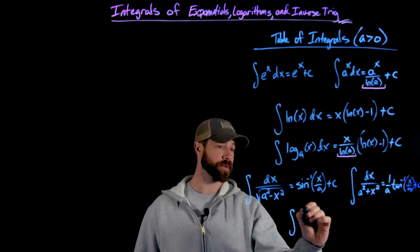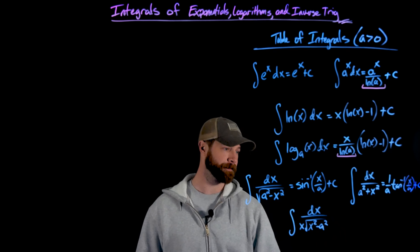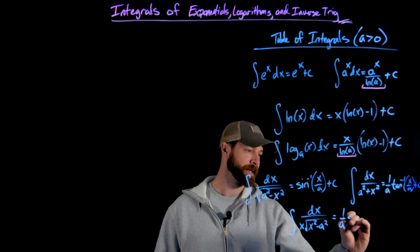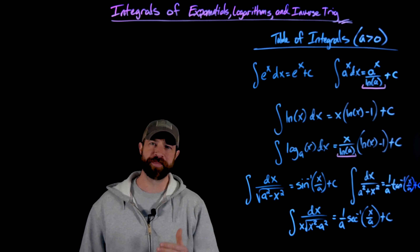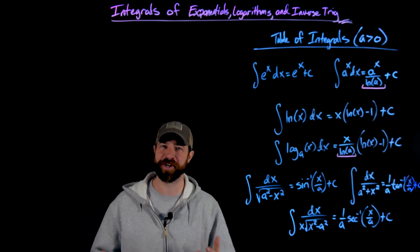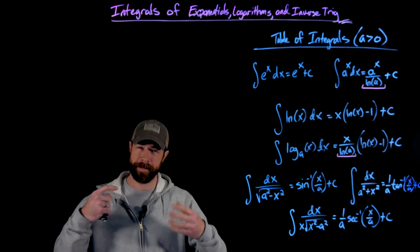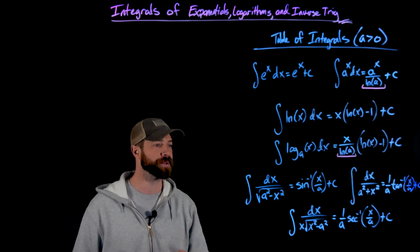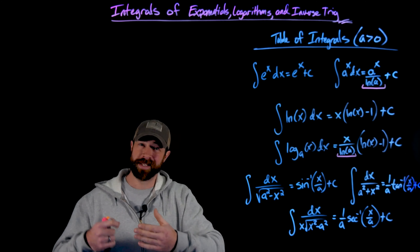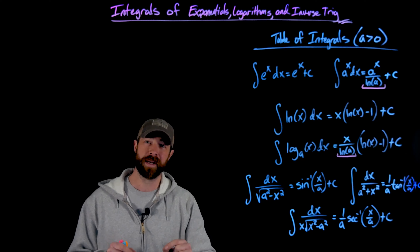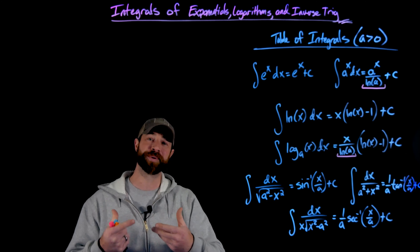Finally, we look at the integral of 1 over x times the square root of x squared minus a squared, which results in 1 over a times secant inverse of x over a, plus c. You might wonder why we chose sine inverse, tangent inverse, and secant inverse — where's cosine, cotangent, and the others? We choose these three because they give us three different unique forms. Cosine inverse and sine inverse have the same derivative except for a factor of negative 1, meaning you can always convert a cosine inverse problem into a sine inverse problem by applying a negative.